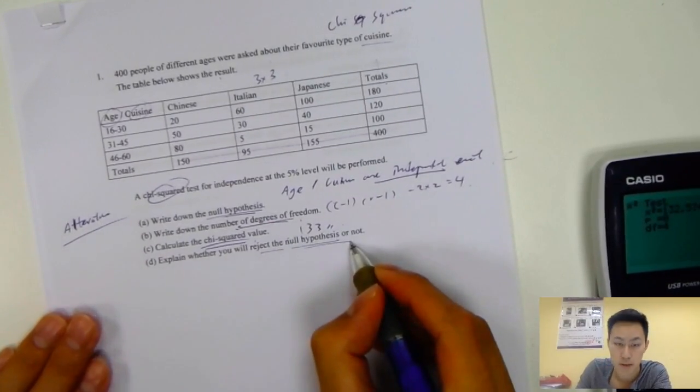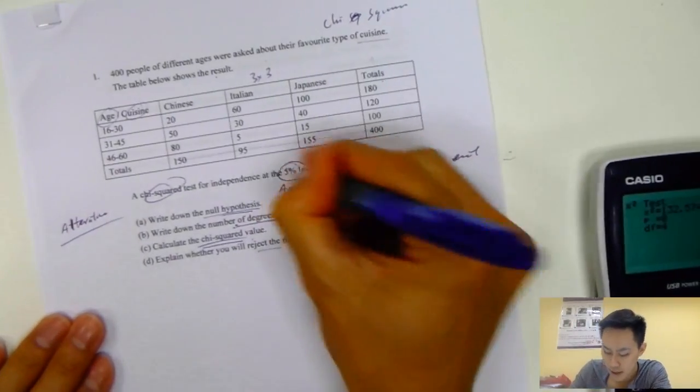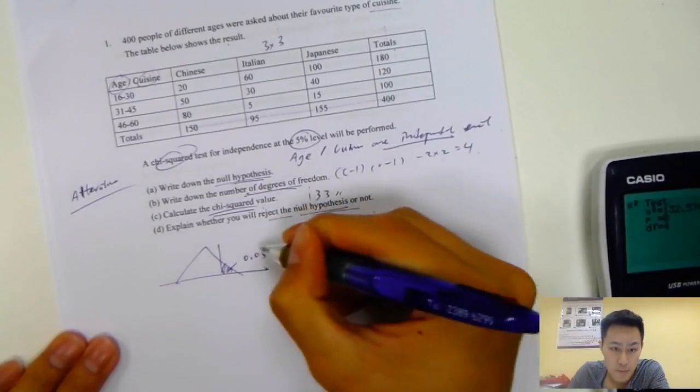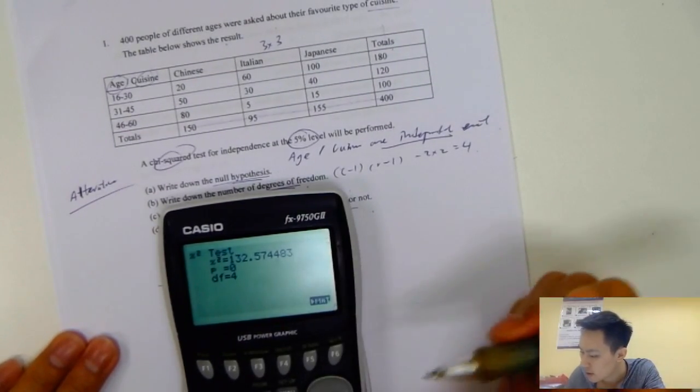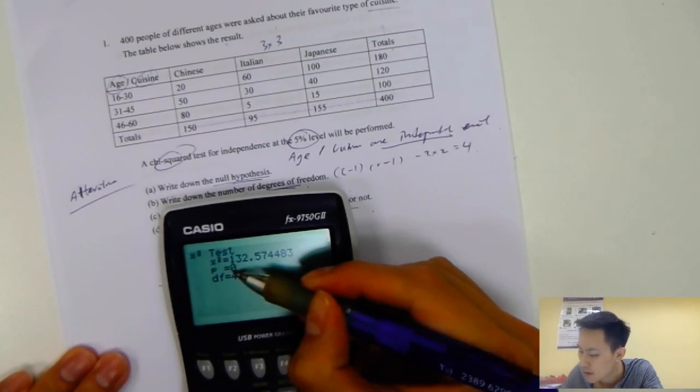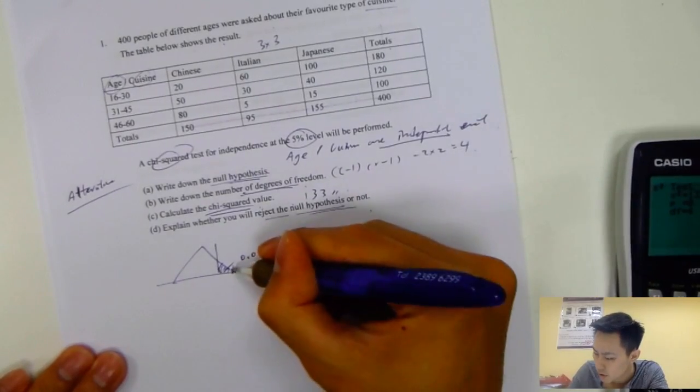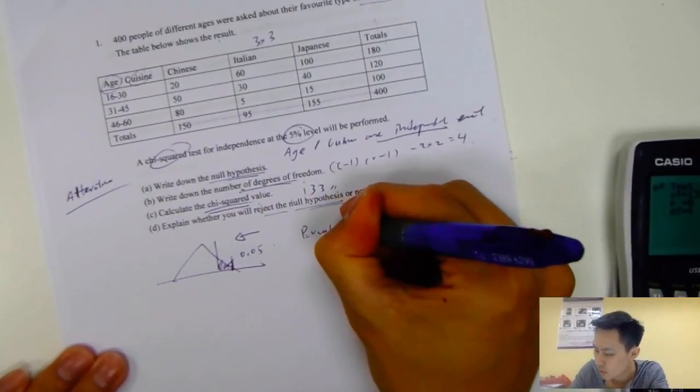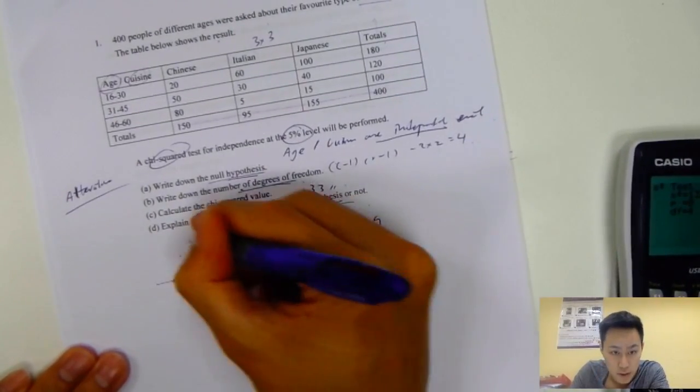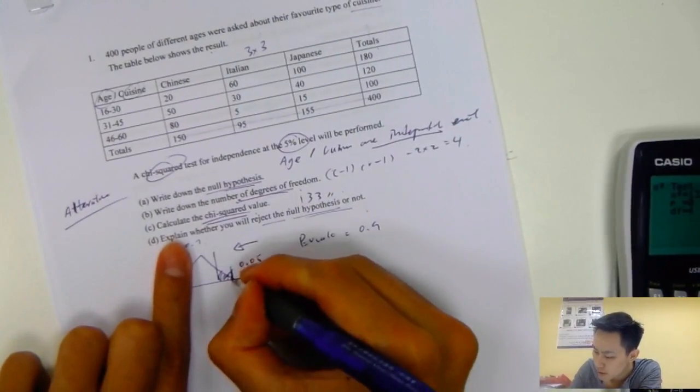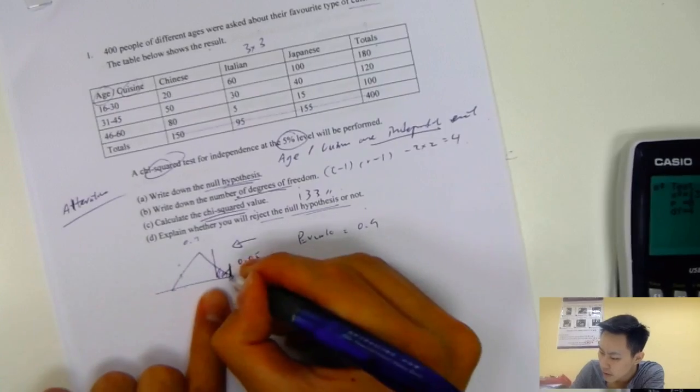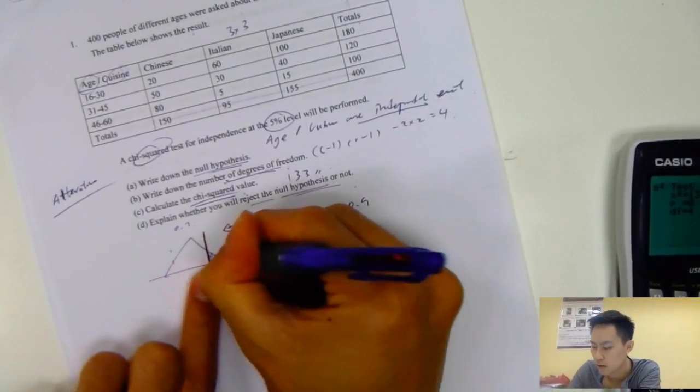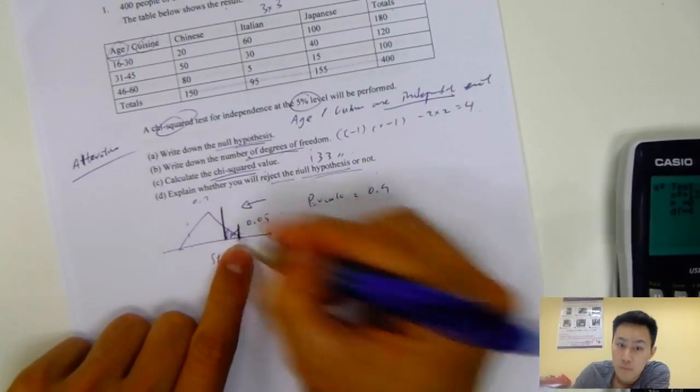For part D, explain whether you will reject the null hypothesis or not. For the rejection, you need to look at the 5% level. Let me draw a graph so we can visualize this. 5% is right here, and we have the p-value. You have to look at the p-value. The p-value is 0, so it's around here. We start calculating the p-value from this way. If I give you p-value equals 0.9, it will be right here. This whole thing will be 0.9. Now we know that 0, which is a very small number, will be right here. This bar is standard. You can imagine this is a standard bar.